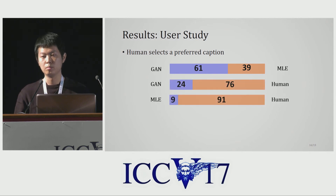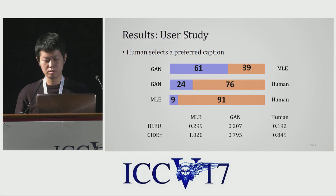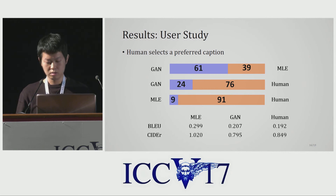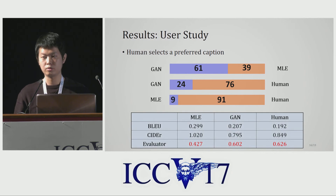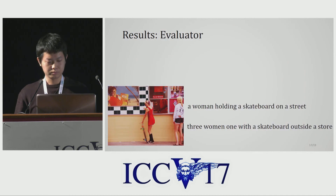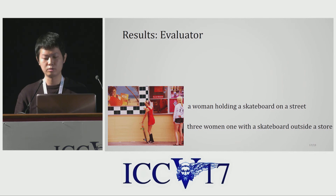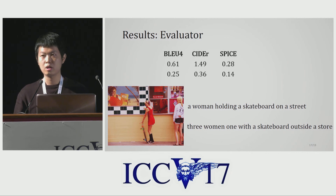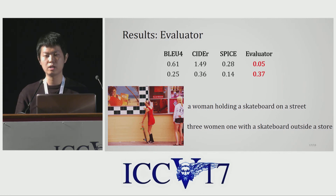However, when compared to human captions, both GAN and MLE are far from competitive, indicating there are still clear gaps between machine-generated captions and natural ones. Interestingly, if we compute evaluation scores using standard metrics, BLEU and CIDEr prefer MLE over human by a large margin. While our learned evaluator prefers human over both MLE and GAN. Specifically, for an image with two captions where the second is more informative, classical metrics give much higher scores to the first one as it contains more frequent training n-grams — except our evaluator, which gives relatively better scores to the more informative caption.